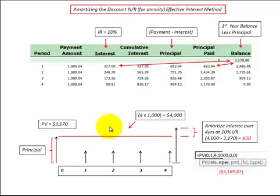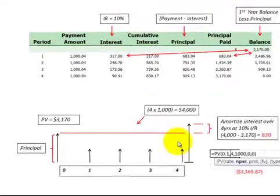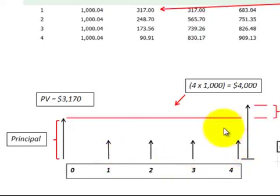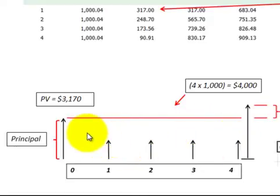In this presentation I'm going to show you how to calculate the discount on a notes receivable and how to allocate its interest expense. Let's look at the example here where we have four equal payments at the end of each of the next four years for either notes receivable or payable, and what we have to do is discount these four payments back to their present value at the beginning of year one.